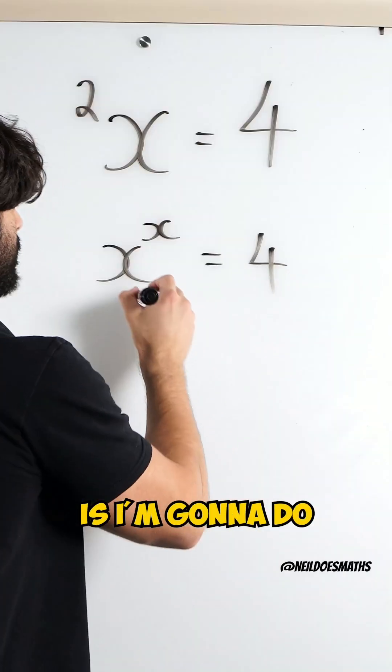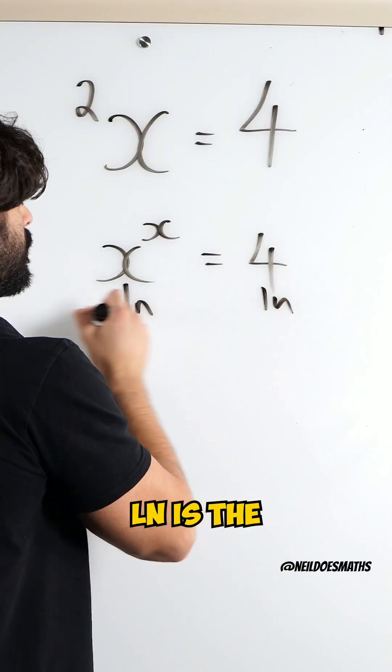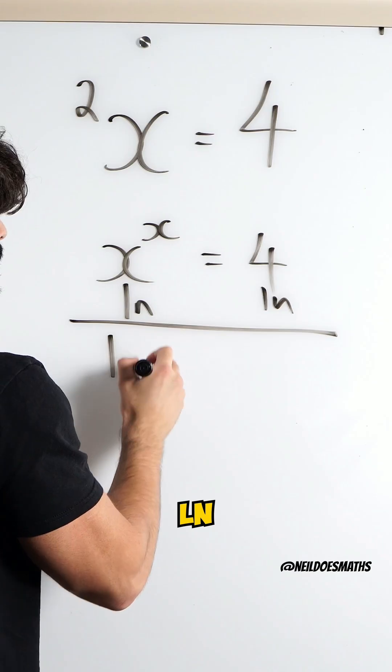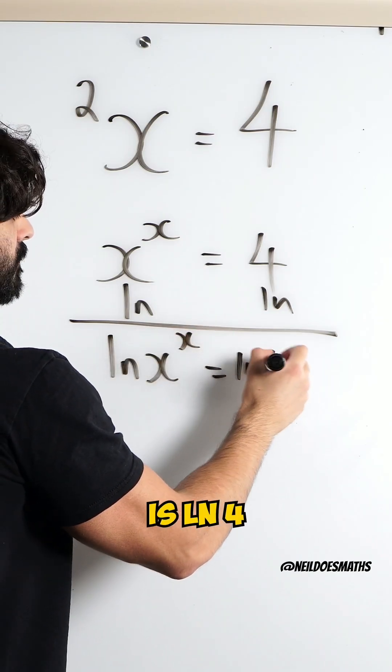The way I'm gonna do that is I'm gonna do ln of both sides. ln is the inverse of e to the power of x. So I have ln of x to the power of x is ln 4.